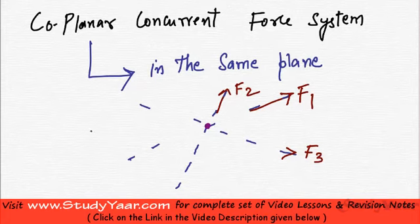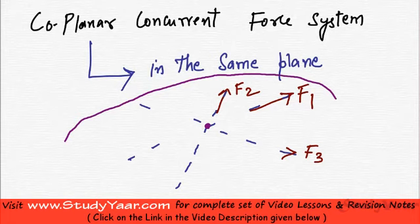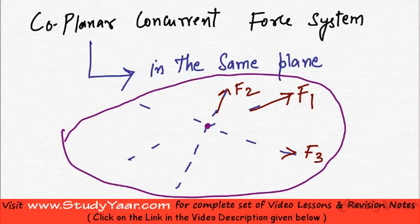So I say that F1, F2, F3, which are in this case in the same plane which is the plane of the screen, are basically a concurrent coplanar system of forces. Why they are coplanar? Because they are in the same plane. Why they are concurrent? They are concurrent because their line of actions meet at a single point.